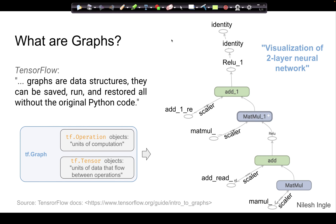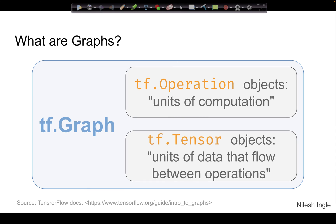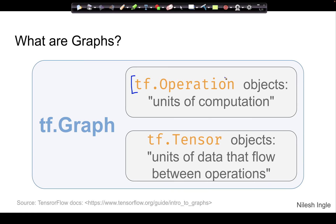Going back to the slide, a graph consists primarily of two things: one is the tf.operations — the actual task performed at each node, which could be addition, subtraction, dot product, etc. The second part is the objects passed between two nodes, which are values in a tensor. A tensor object is a unit of data passed between nodes to help complete an operation.